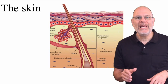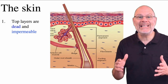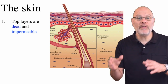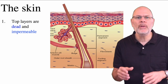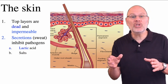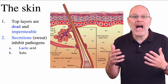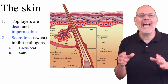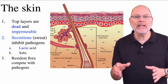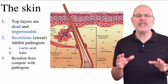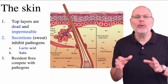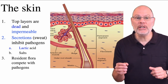Let's start with the skin. Its top layer consists of dead cells that are impermeable to pathogens, but cuts in the skin provide a way for pathogens to enter. Sweat contains substances that inhibit pathogens, including lactic acid, which creates an inhospitable pH environment, and salts that create an inhospitable osmotic environment. Finally, we have what are called resident flora that live on our skin — they're harmless to us and they out-compete pathogens that try to do us harm.